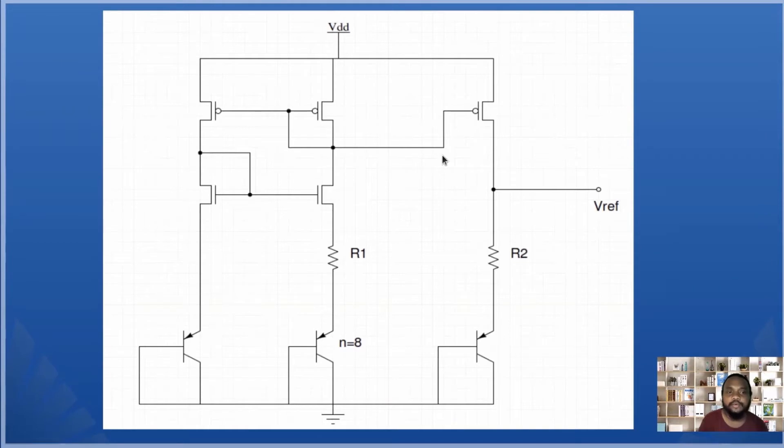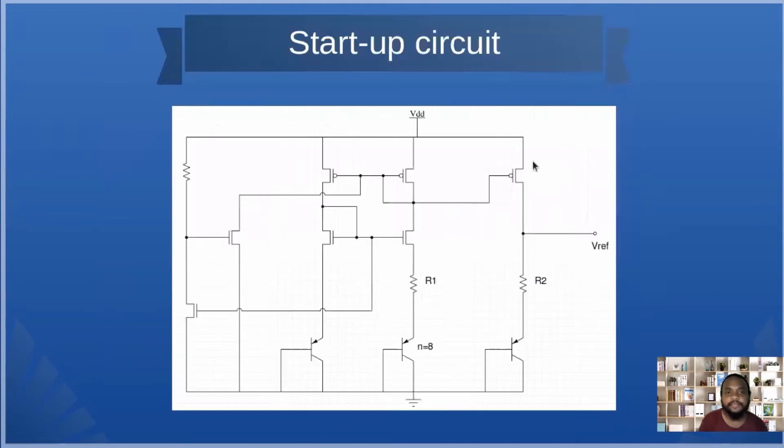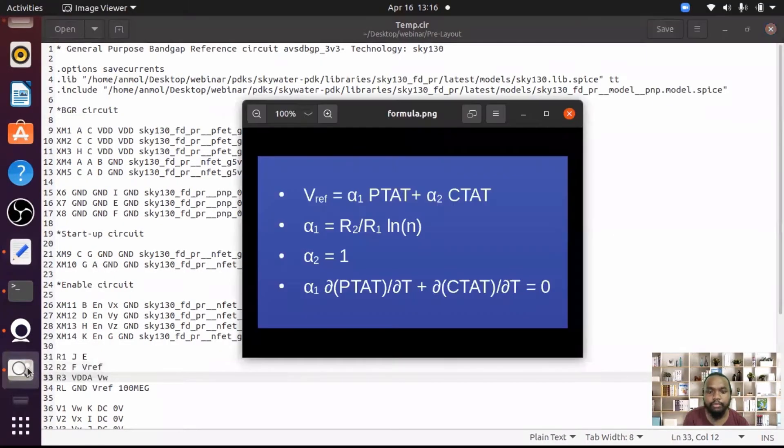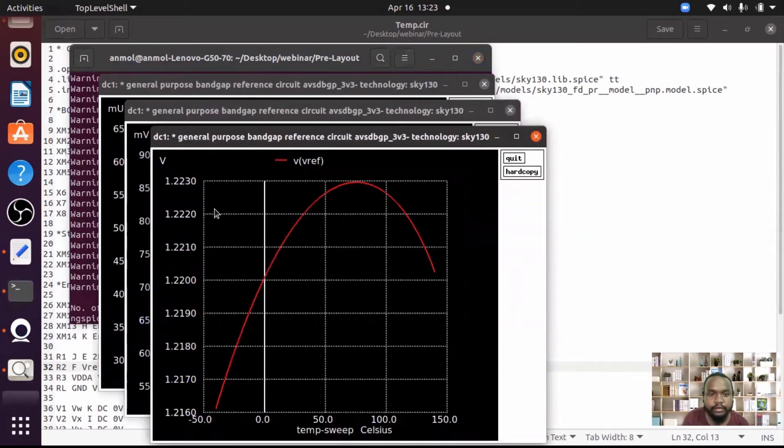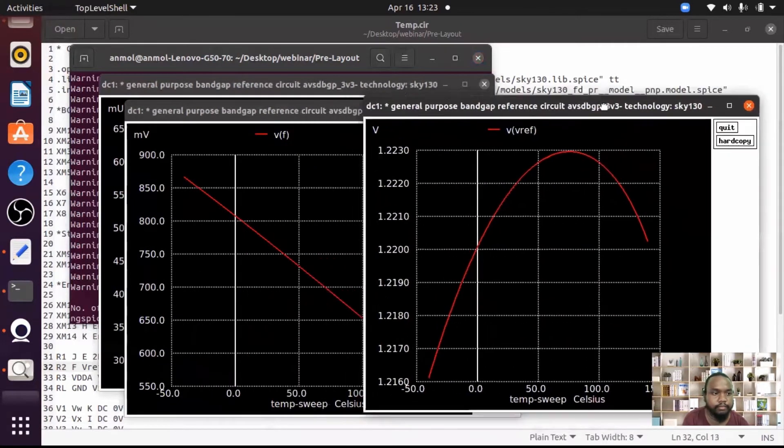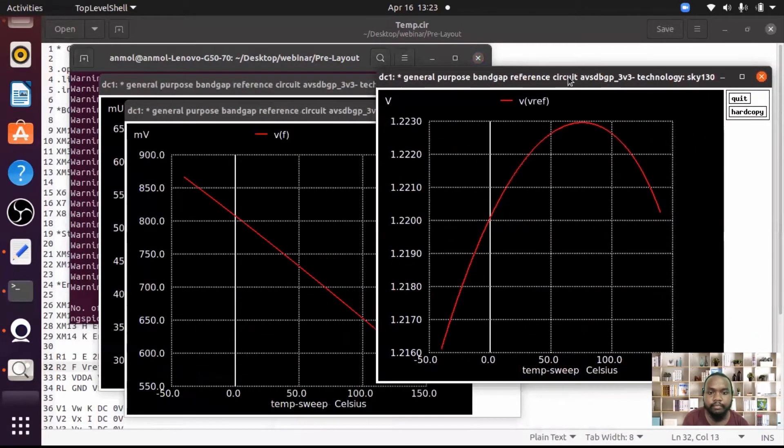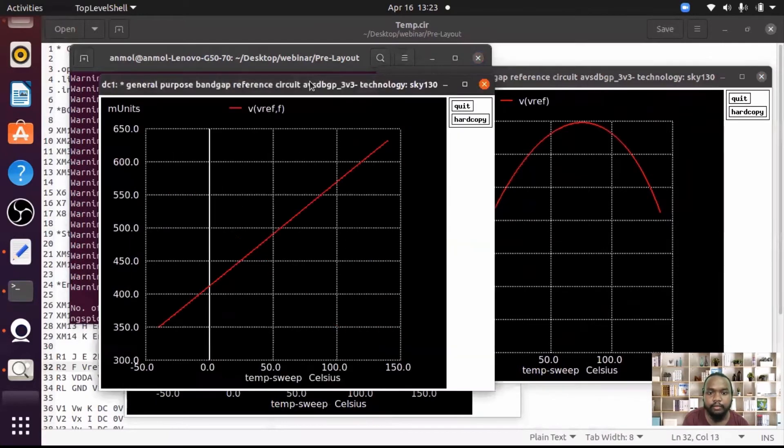This can be avoided by using a startup circuit. The startup circuit along with the BGR circuit is shown in this diagram. We will be using the formula alpha 1 slope of PTAT plus slope of CTAT is equal to 0. Now we can see here that our V reference is having characteristic more like a PTAT.